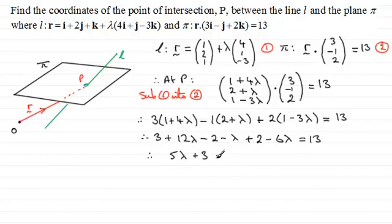And if I rearrange this, take 3 from both sides, it follows that 5λ would equal 10. And if I now divide both sides by 5, it follows that λ will equal 2.